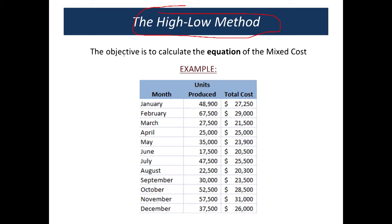The objective, again, is to calculate the equation of the mixed cost — that y equals a plus b times x. I've learned that the best way to teach the high-low method is actually just to do an example, so we're going to do an example here.